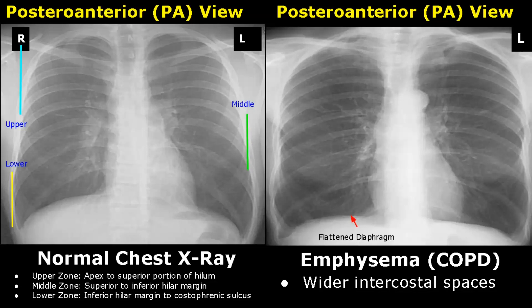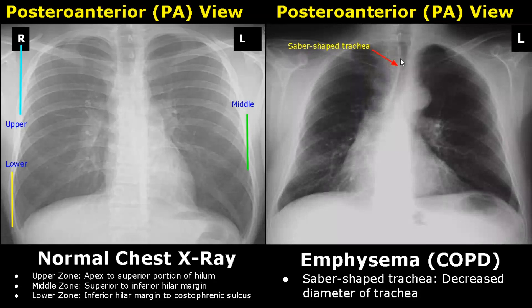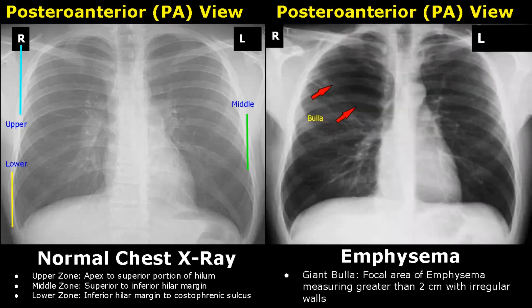A saber-shaped trachea may also be observed, due to decreased diameter of the trachea. Bullous changes may occur in some cases — a bulla is a focal area of emphysema measuring greater than 2 cm with irregular areas.